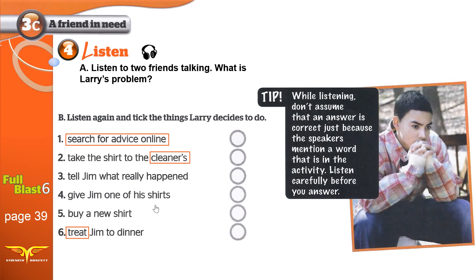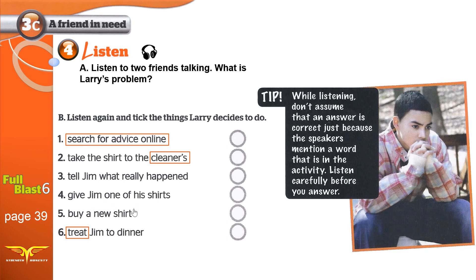4. Give Jim one of his shirts. Larry is wearing a checked shirt at the moment — will he give Jim one of his shirts? 5. Buy a new shirt. 6. Treat Jim to dinner — invite Jim to dinner. Even before we listen, by reading and understanding these sentences, it's obvious that his problem is he took a shirt from Jim and then made it dirty. He made it a mess. He ruined it.